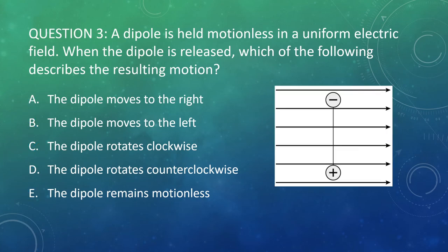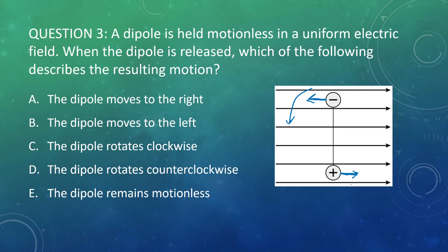Question three: here's a dipole again in an electric field. When you let go of it, what happens? This time we will see motion. The positive wants to move with the electric field, the negative wants to move against it. This causes an overall rotation of the object — a torque causing rotation. Looking at the directions of the arrows, that rotation would be in the counter-clockwise direction. The answer is D.